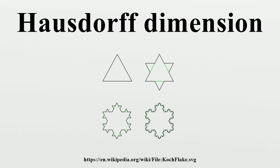Space-filling curves like the Peano curve and the Sierpinski curve have the same Hausdorff dimension as the space they fill. The trajectory of Brownian motion in dimension 2 and above has Hausdorff dimension 2 almost surely. An early paper by Benoit Mandelbrot entitled 'How Long Is the Coast of Britain? Statistical Self-Similarity and Fractional Dimension' and subsequent work by other authors have claimed that the Hausdorff dimension of many coastlines can be estimated.